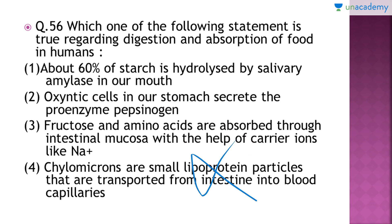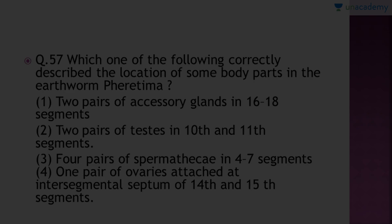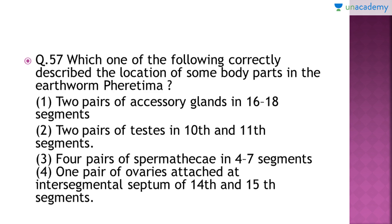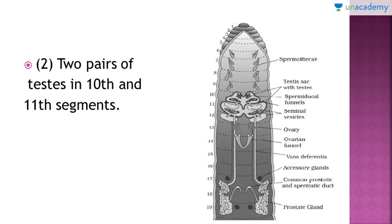Question number 57: Which one of the following correctly describes the location of some body parts in the earthworm Pheretima? Note that earthworm and frog have been included in the NEET syllabus, so please do not skip them. In NEET 2017 two questions were asked from frog. The right answer is option number two — two pairs of testes are present, one in the tenth segment and one in the eleventh segment.